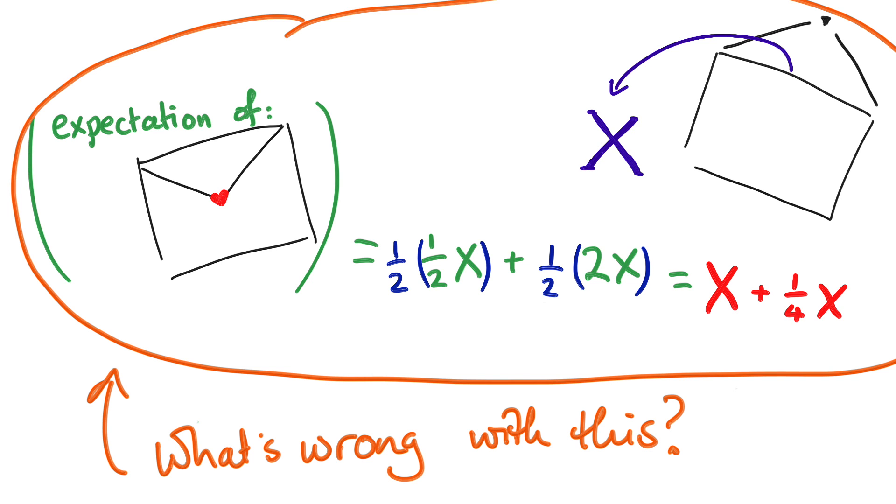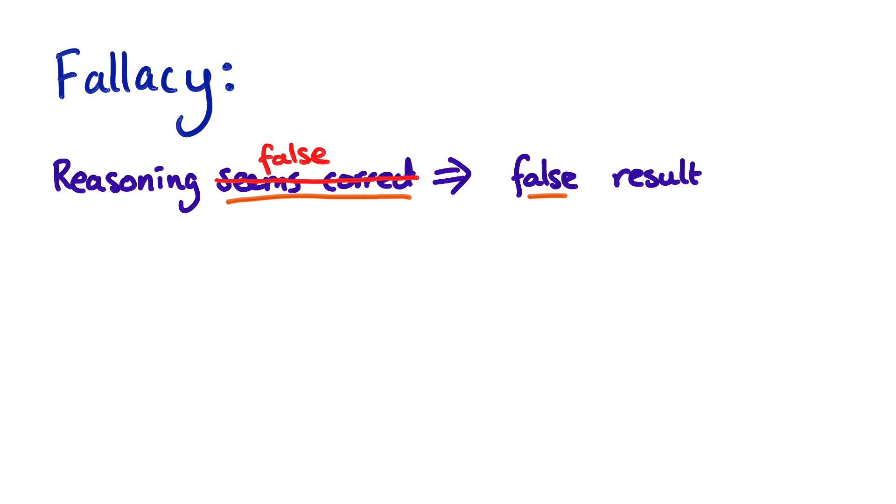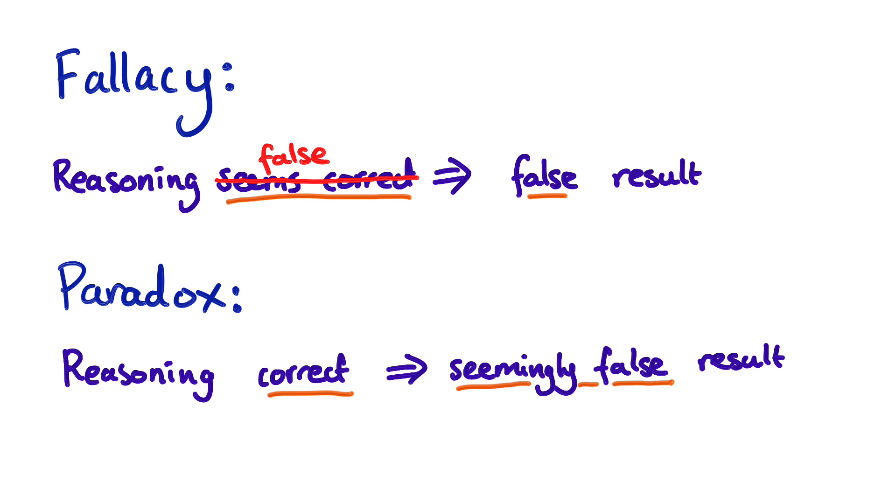See, this is what we call a fallacy when you have reasoning that seems correct but gives you a false result, as opposed to a paradox which has correct reasoning but leads to a seemingly impossible result which is actually correct.